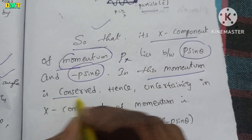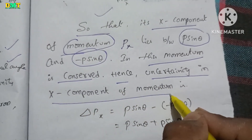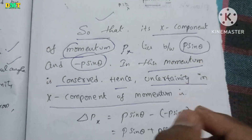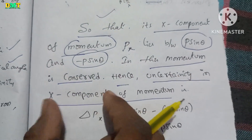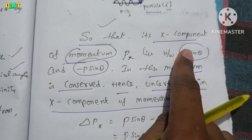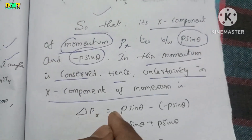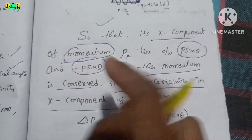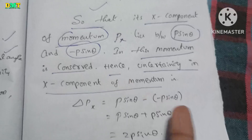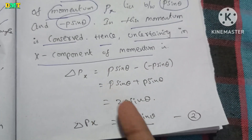Momentum is conserved. Hence, the uncertainty in the x-component of momentum: delta Px is equal to P sin theta minus (minus P sin theta). That gives P sin theta plus P sin theta, which equals 2P sin theta. So delta Px = 2P sin theta.